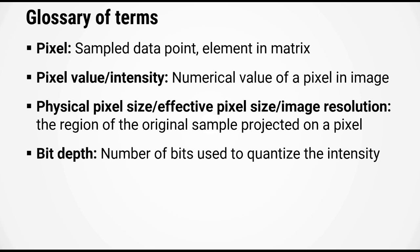Just a quick summary of the terms that we have introduced in this video. First, a pixel is a sample data point and is stored as an element in a matrix. The pixel value, or the intensity, is the numerical value of a pixel in the image. This number represents the amount of light falling on that pixel. The physical pixel size, or sometimes called the effective pixel size or image resolution, is the region of the original sample that is projected on the single pixel of the camera. And finally, the bit depth is the number of bits used to quantize the intensity.